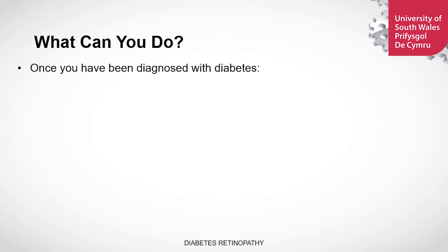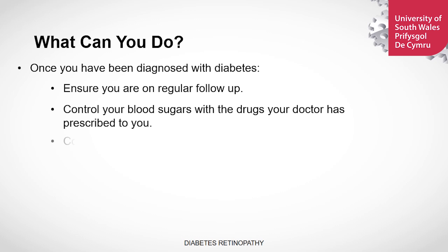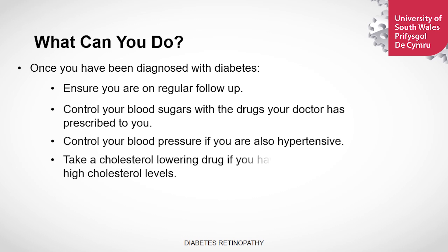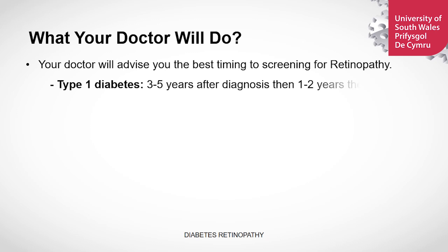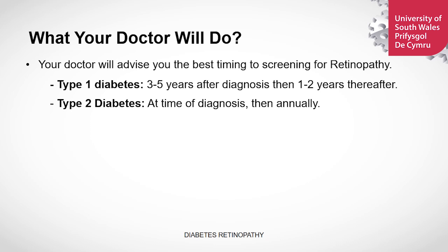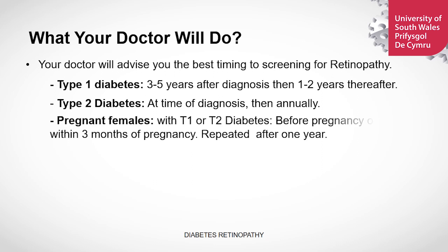When you're diagnosed with diabetes, ensure you're on a regular follow-up. Make sure your sugars are well controlled. Your blood pressure, if you're hypertensive, should be well controlled. You should be taking a cholesterol drug if your cholesterol levels are high. If you're smoking, you should be encouraged to stop. Your doctor will advise you the best time for screening of your retinopathy. For type 1 diabetes, this is between three to five years after the diagnosis, whereas for patients who have type 2 diabetes, the screening should be done at the time of diagnosis. If you're pregnant, make sure your eyes are checked before pregnancy or three months into the pregnancy, and a repeat check should be done after one year.